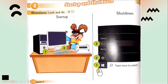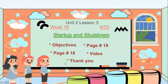We have three steps to shut down the computer. One: click on the Start button. Two: click on the Power button. Three: you will choose shut down. You have three choices but you will choose shut down. These are the three steps to shut down the computer. Let me show you a video about how to start the computer.